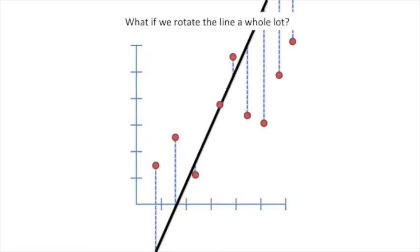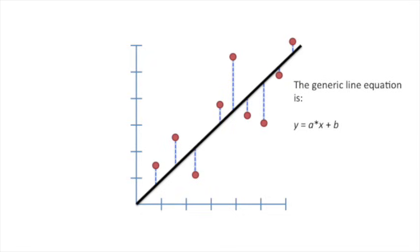What if we rotate the line a whole lot? Well, as you can see, the fit gets worse. In this case, the sum of squared residuals is 31.71. So there's a sweet spot in between horizontal and too vertical. To find that sweet spot, let's start with the generic line equation.